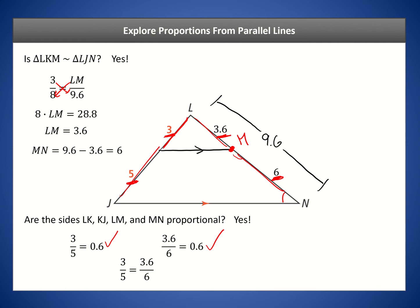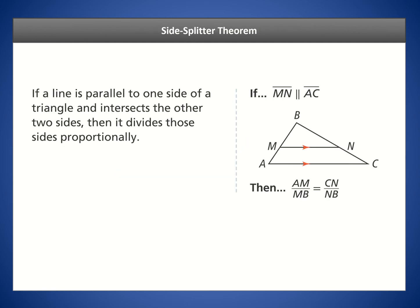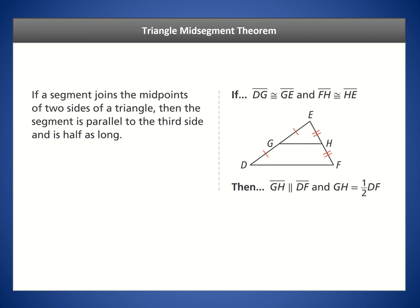So it's not only true that 3 is proportional to 8 — the total — it's also true that 3 is proportional to 5 itself. Those sides are proportional to each other, as well as 3.6 to 6. This is the Side Splitter Theorem: when a line is parallel to one side of a triangle and intersects the other two sides, it divides those sides proportionally — meaning the ratio of one part to the other is the same on both sides.